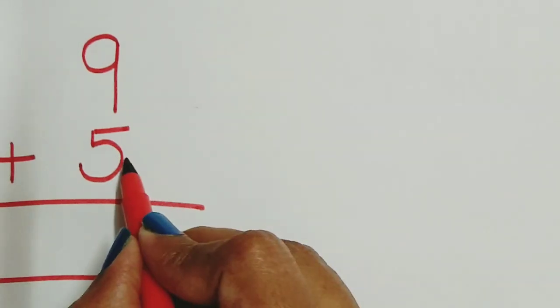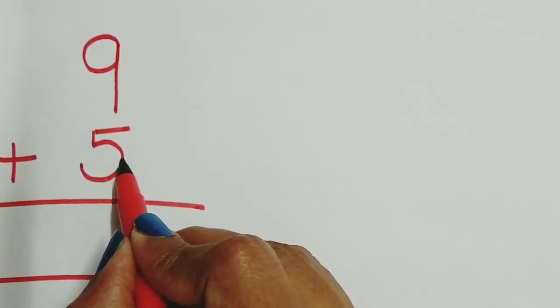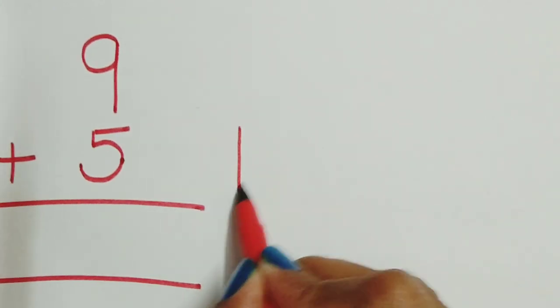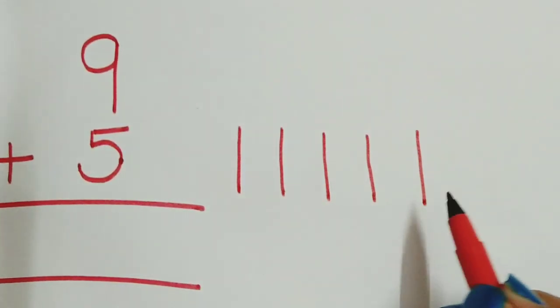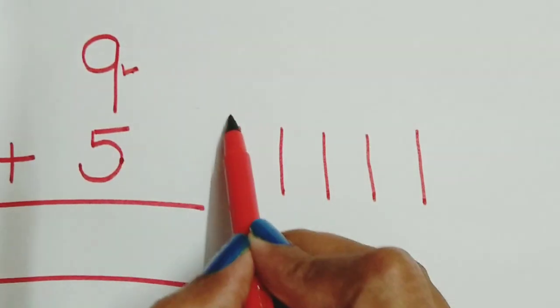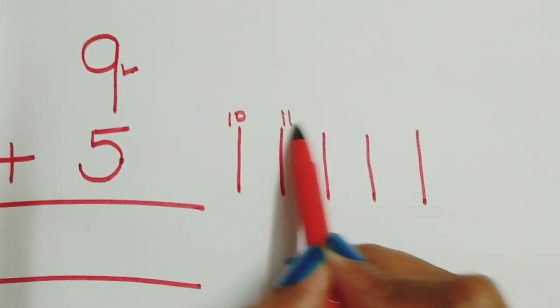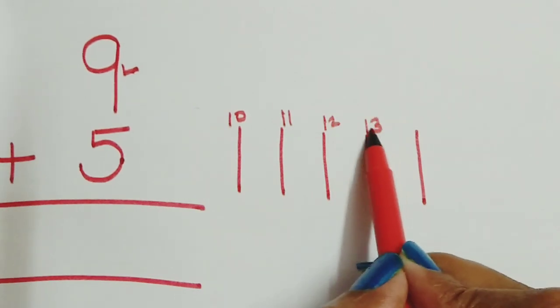Always draw a line for the downward number, that is 5: 1, 2, 3, 4, 5. And count the numbers after 9. That is 10, 11, 12, 13, 14.